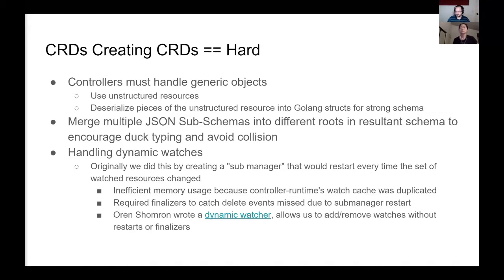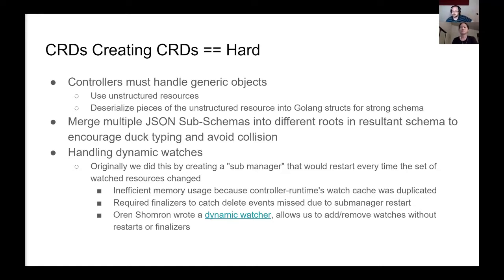Wherever we needed to have strongly typed subschemas — for things like status — we serialize the JSON subtree we're interested in and then re-deserialize it into a strongly typed Golang struct. We also need a way to reliably merge partial JSON schemas for the template arguments and the universal behavior into a fully realized constraint schema. Keeping the two different subschemas in a special route avoids the possibility of collisions when there's overlap between the two schemas.